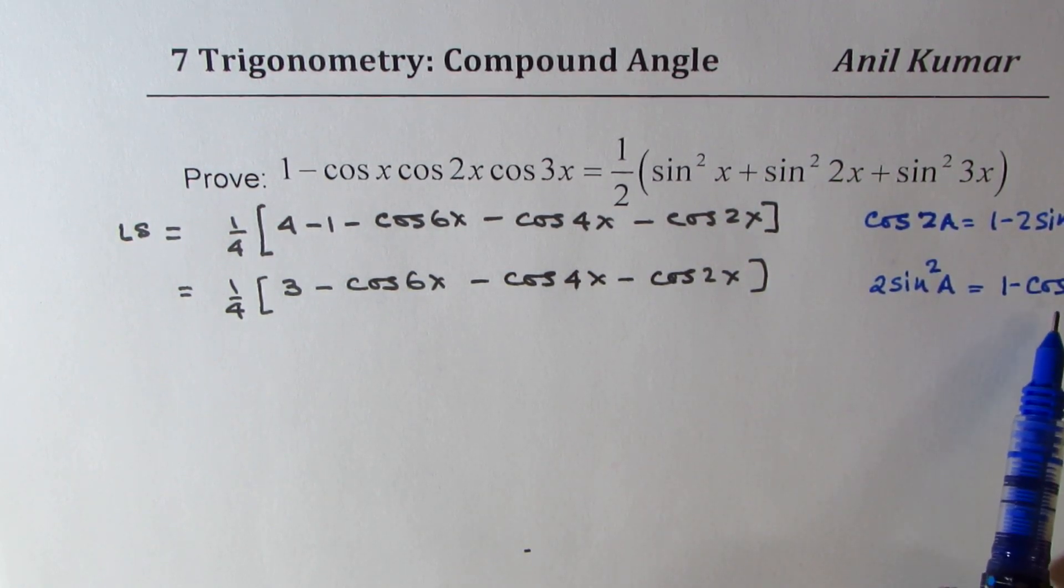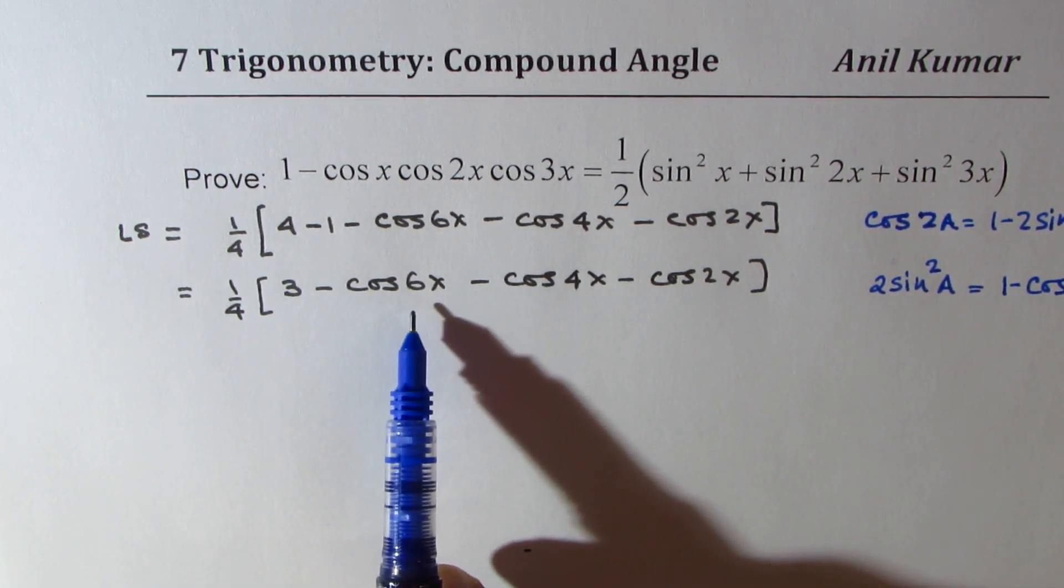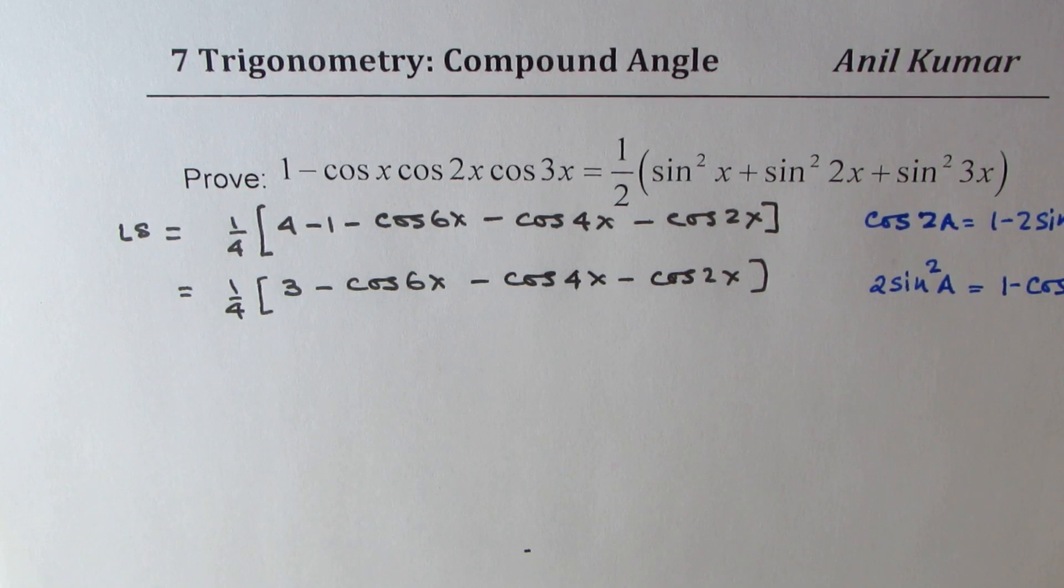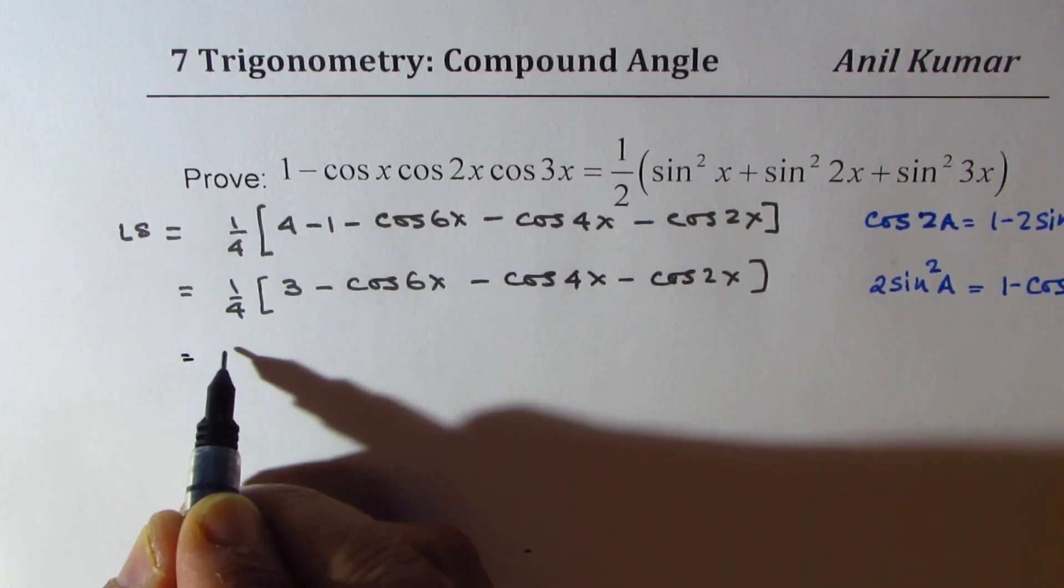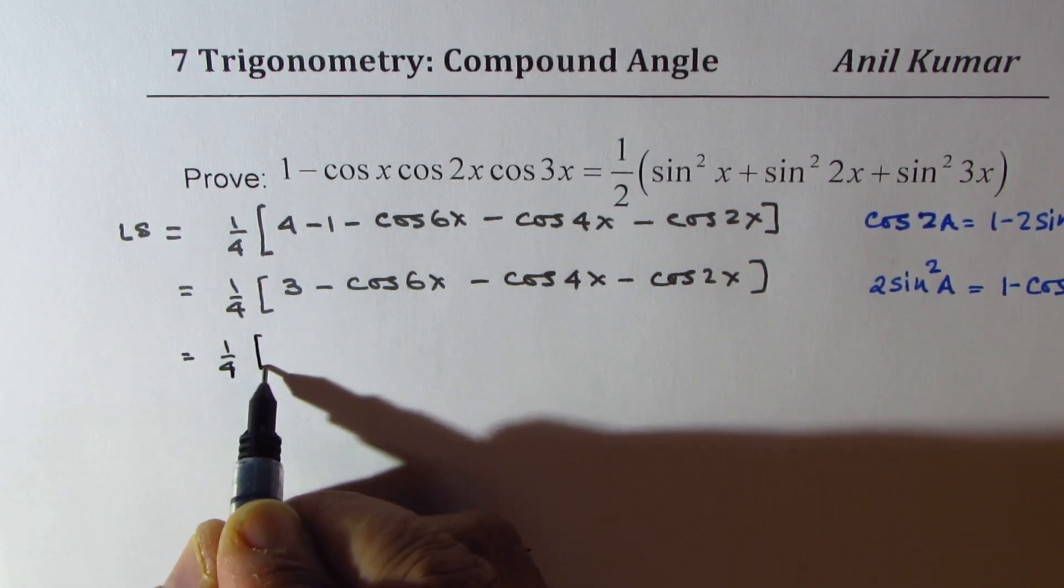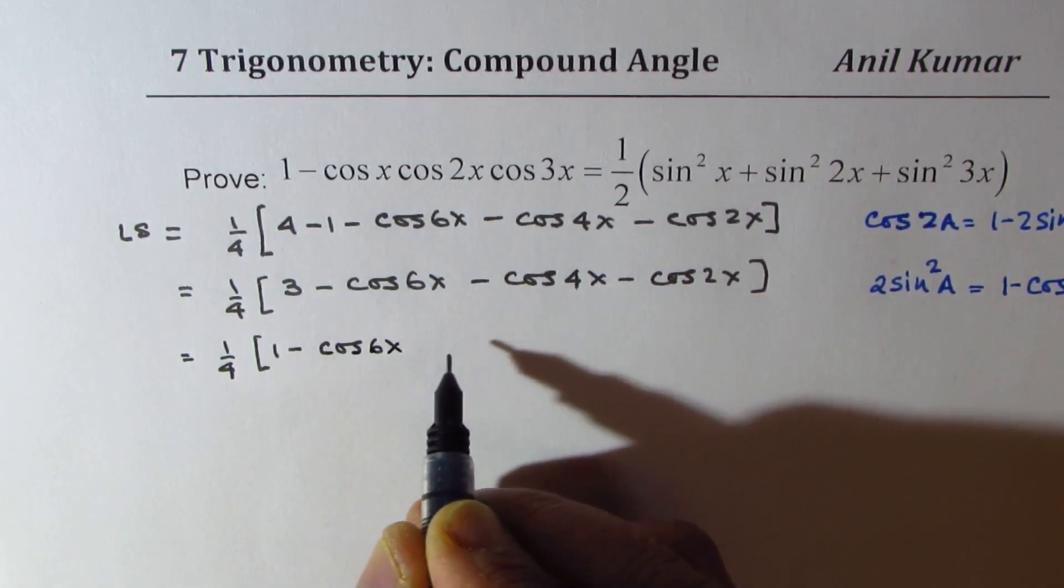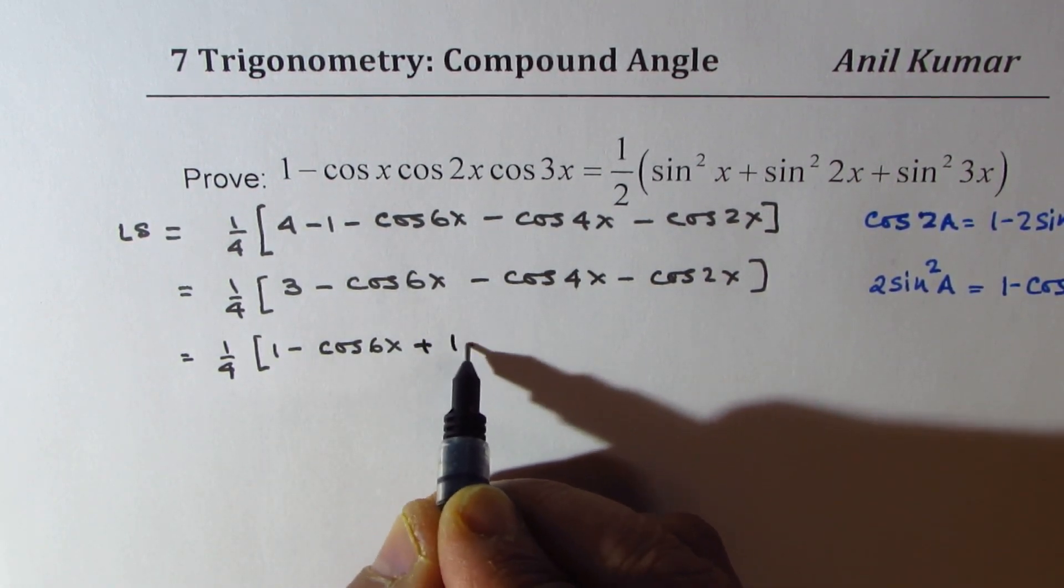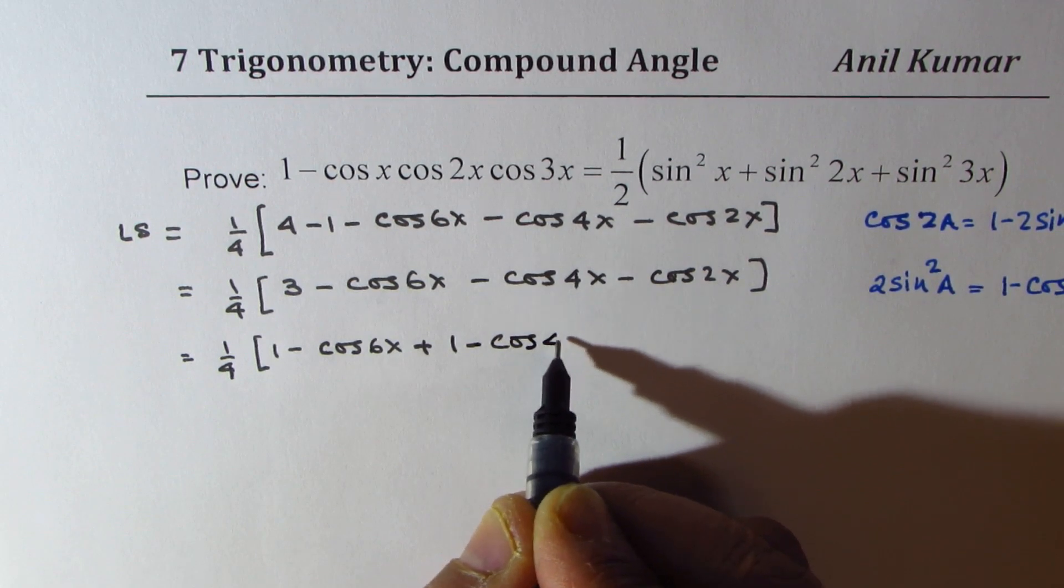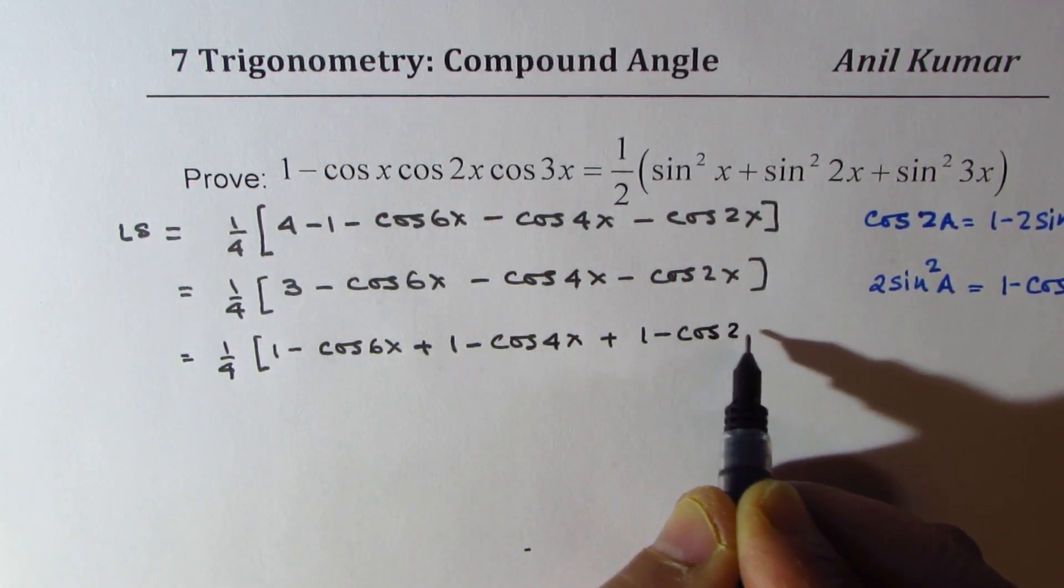So, we'll get 1 over 4, 1 minus cos 6x plus 1 minus cos 4x plus 1 minus cos 2x. Do you see that? So, what we have done here is kind of distributed these 3 ones with each function.